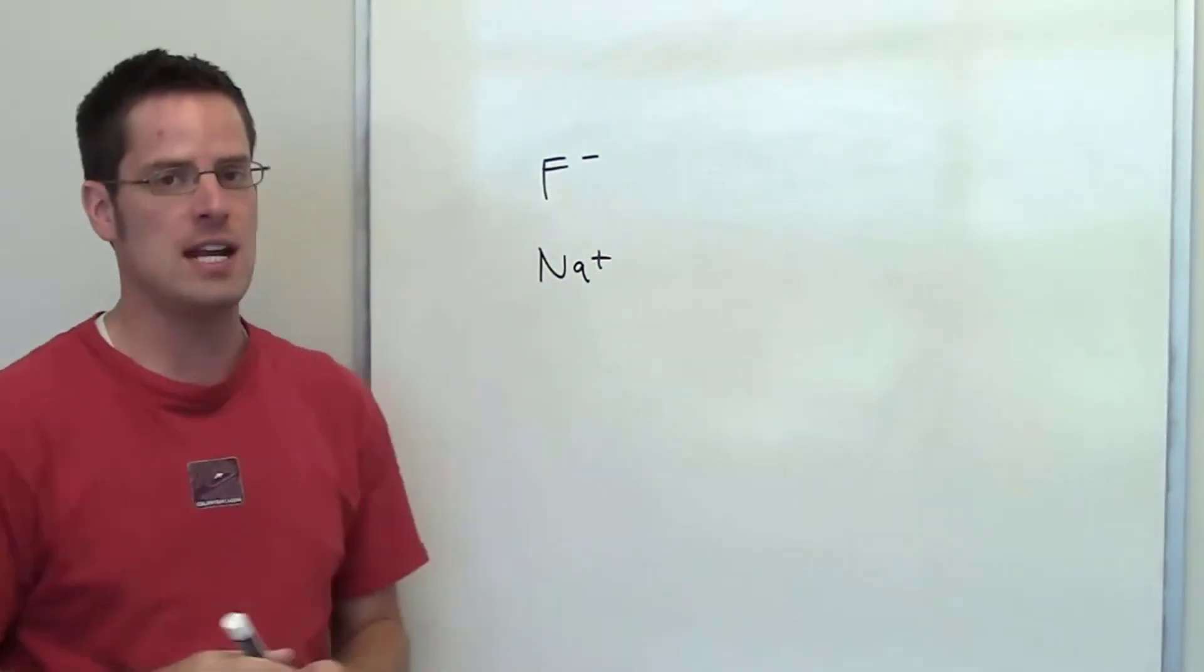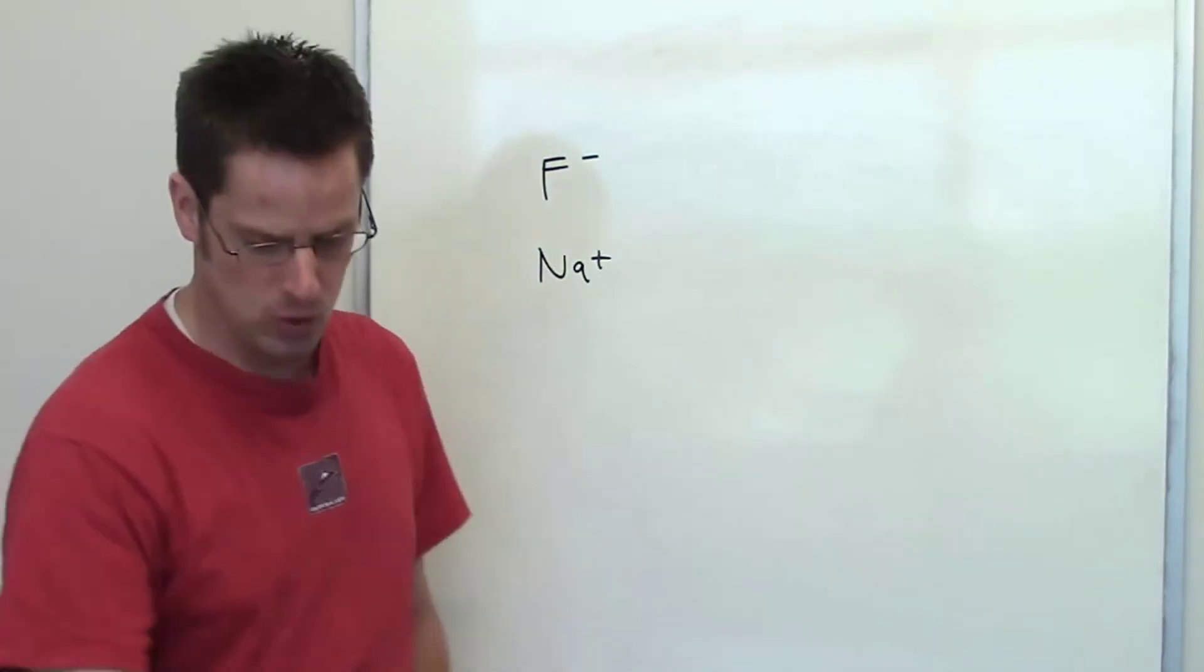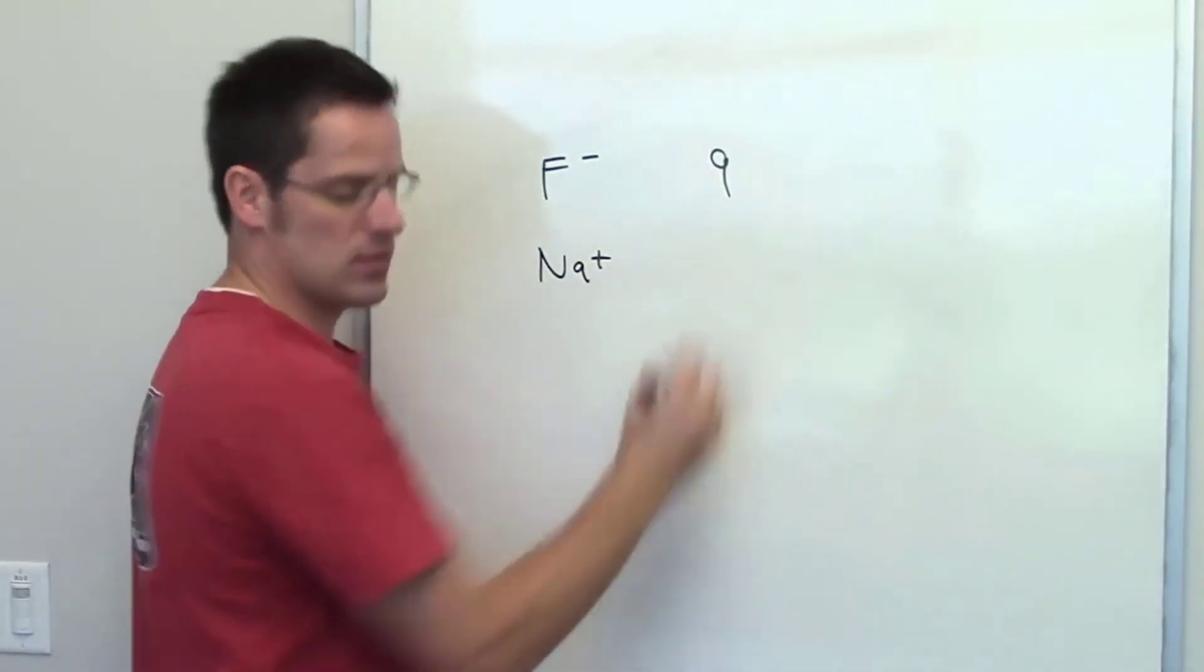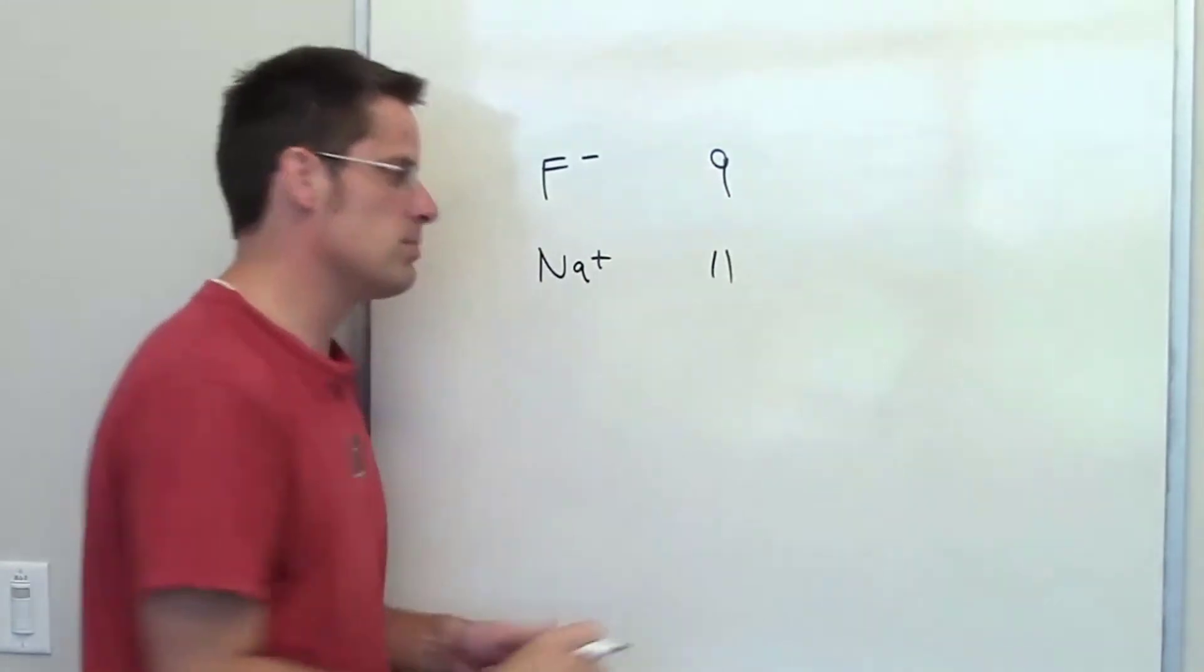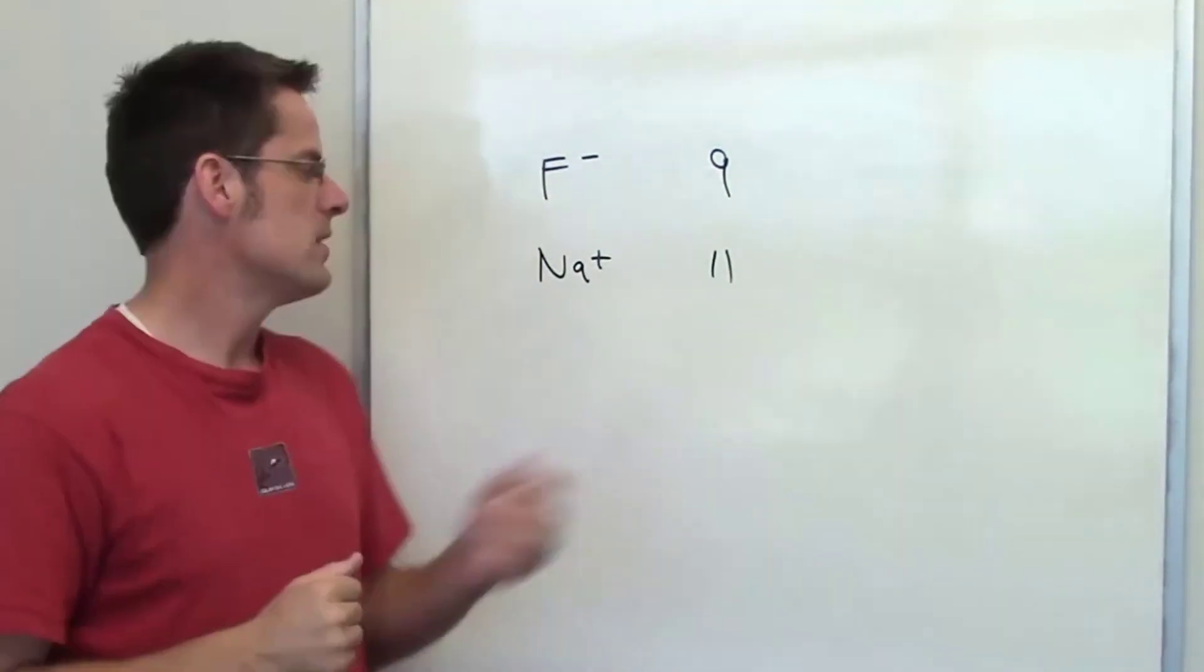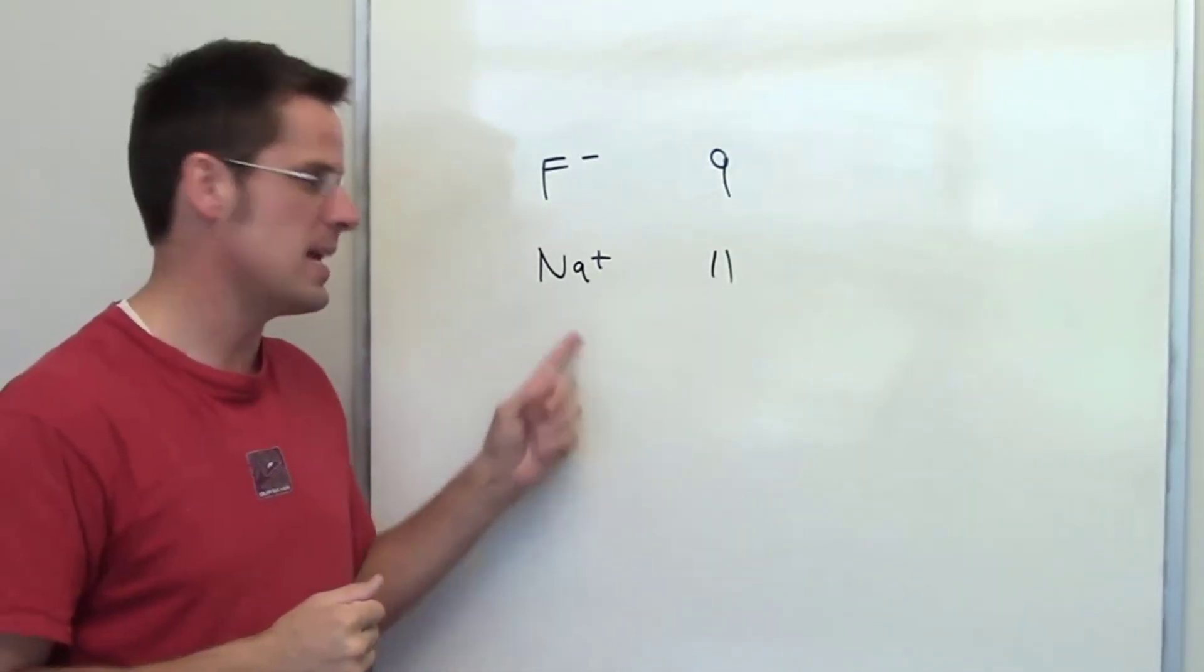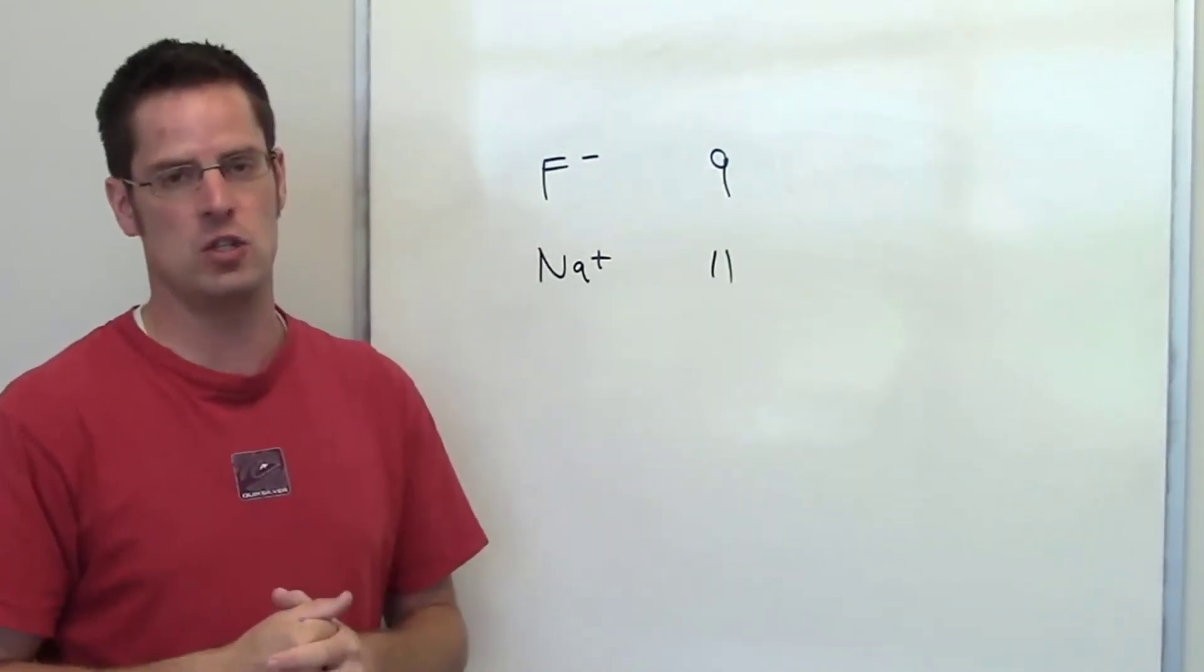The number of protons in each of these elements is, of course, equal to their atomic numbers. In the case of fluoride, that is 9. In the case of sodium, that is 11. Because sodium has more protons, two more protons to be precise than fluoride, sodium cation is going to suck its electrons in more tightly. And therefore, sodium cation will be the smaller of the two ions.